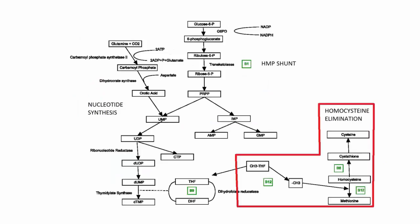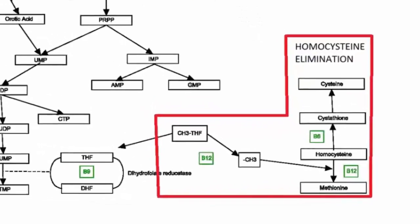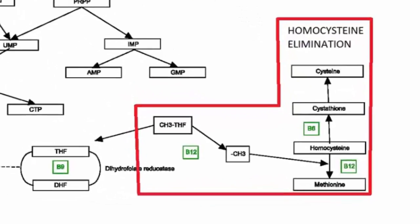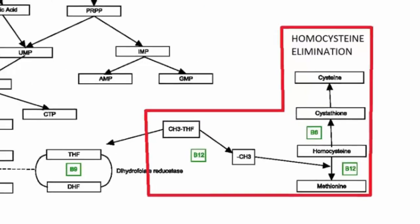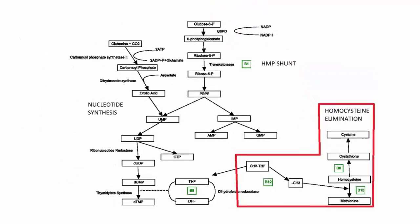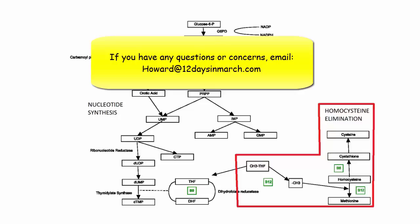Those are two ways to think about questions relating to the homocysteine elimination pathway, and it's important to reference back to put it in context. The methyl group and the role of folate and B12 ties in nicely with the pathway for nucleotide synthesis, which will be covered in another video. If you can keep all three pathways in your head, it really helps to contextualize problems and work your way through different issues. If you have any follow-up questions, please feel free to email us at 12daysinmarch.com.